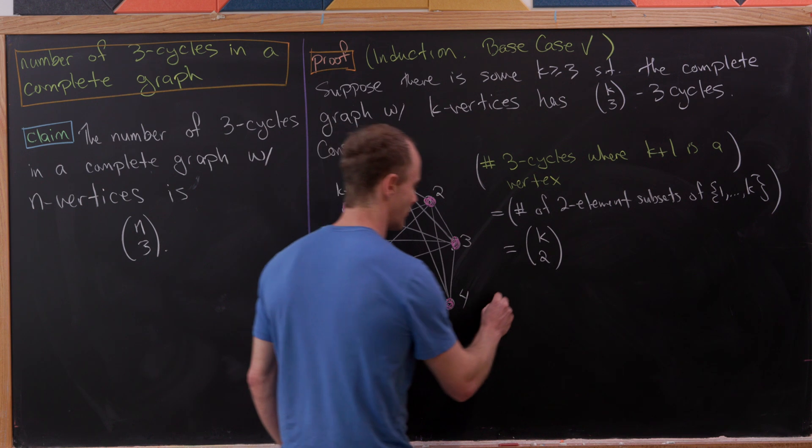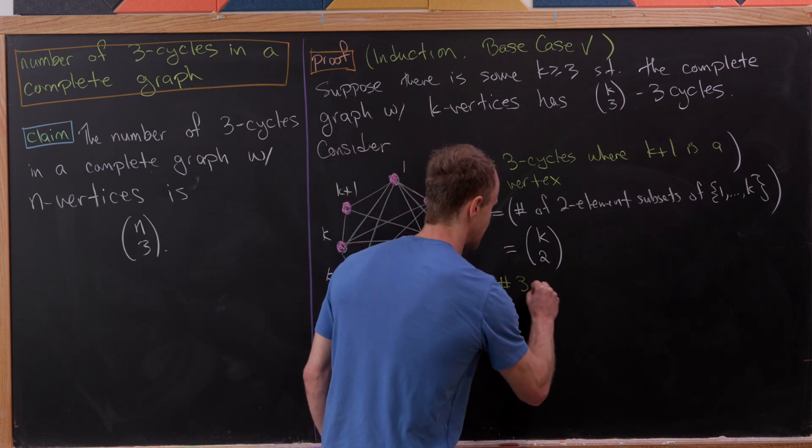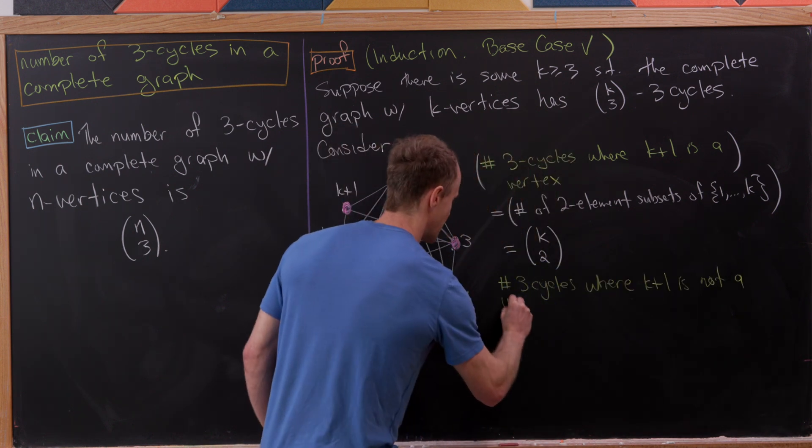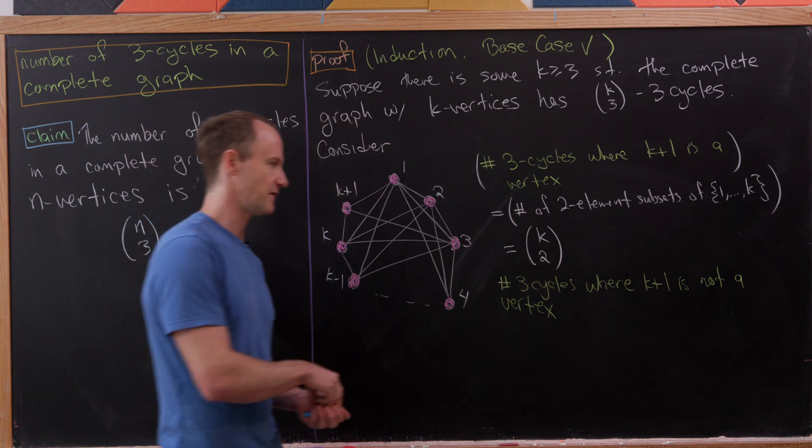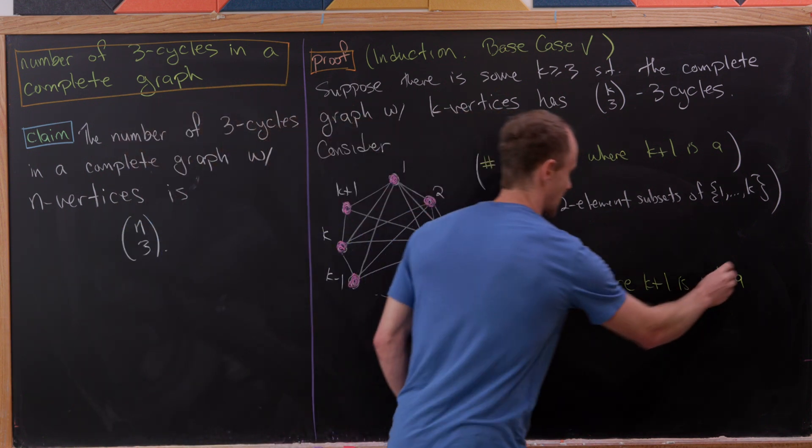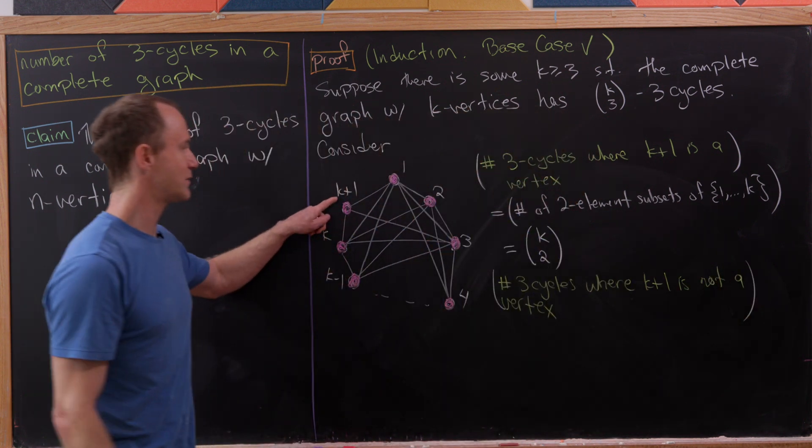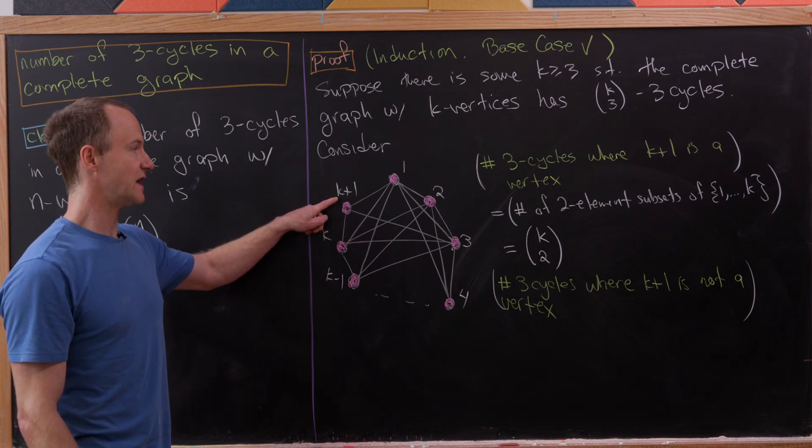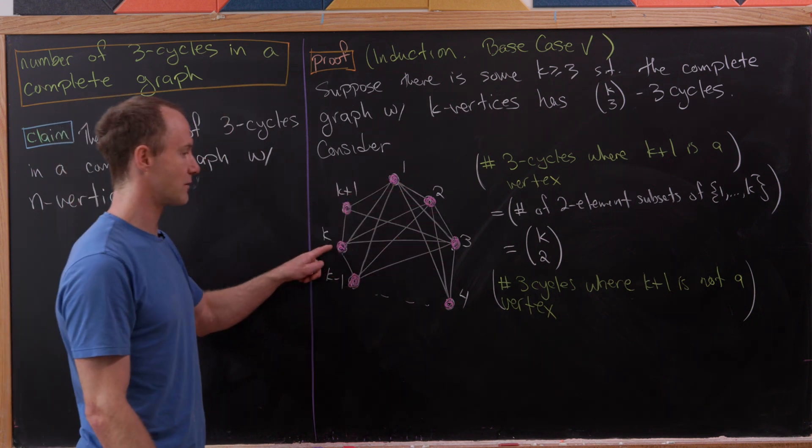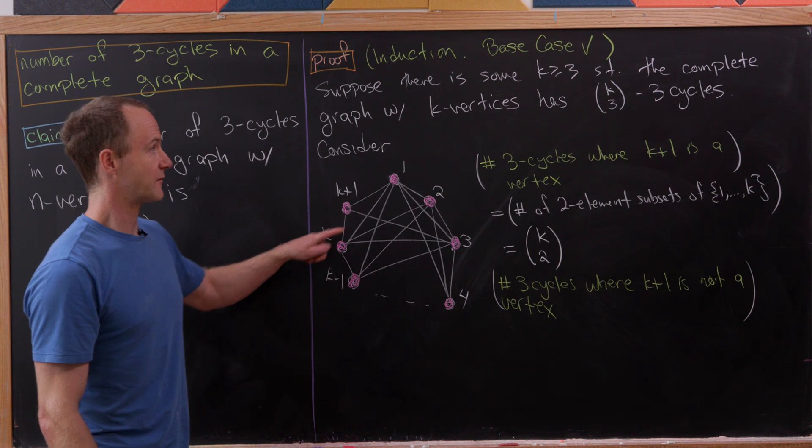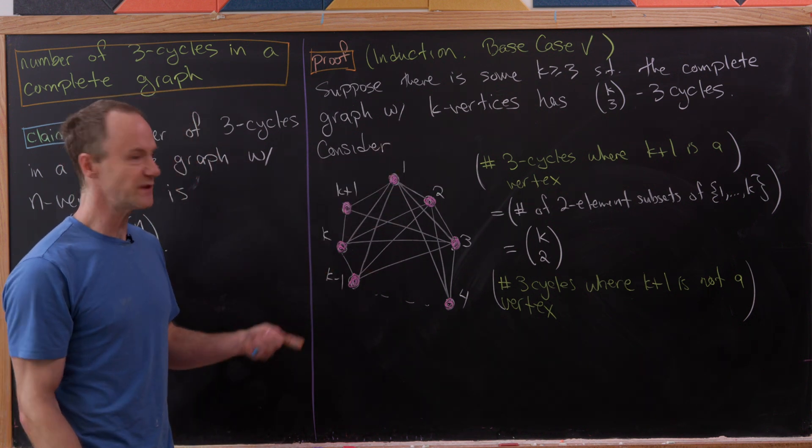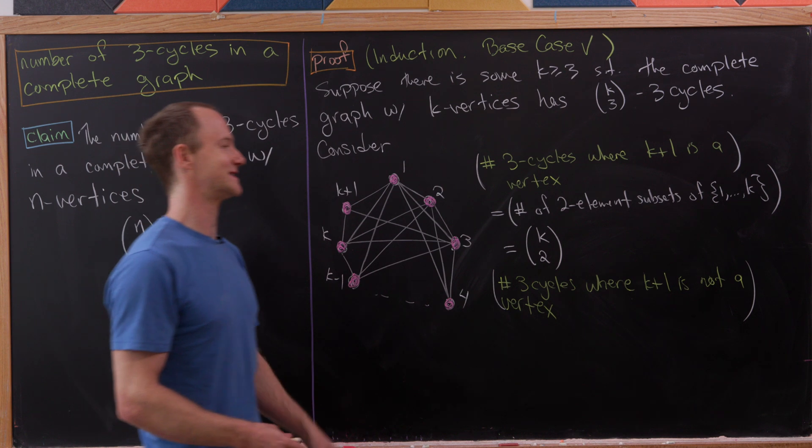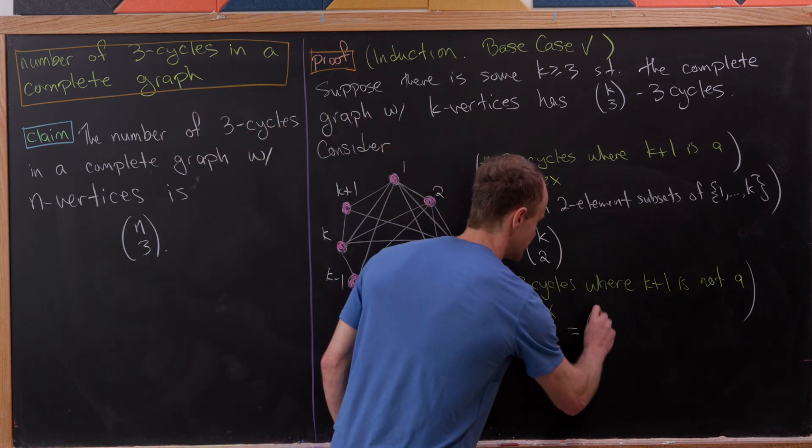Next, we want the number of three cycles where k+1 is not a vertex. In fact, that's even easier to calculate. If k+1 is not a vertex, then it's exactly the number of three cycles from a k-vertex complete graph. By the induction hypothesis, that is k choose 3.